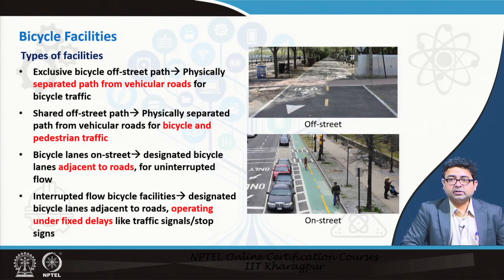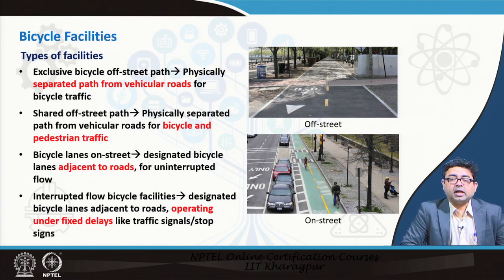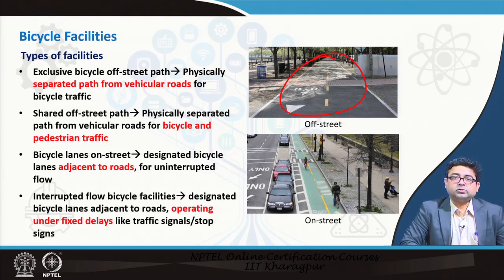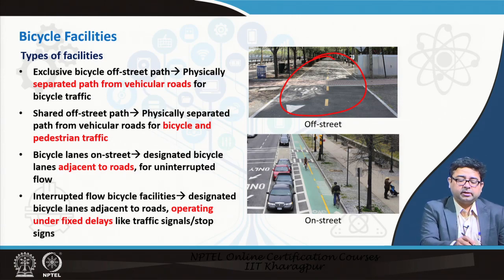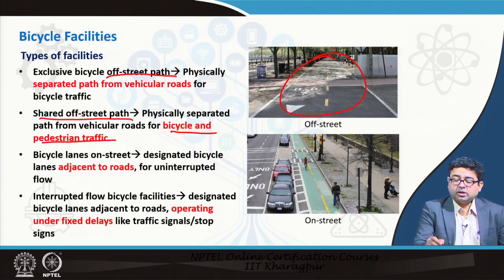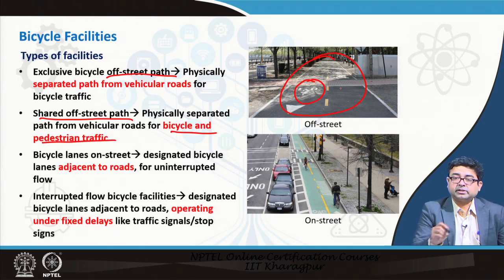Exclusive off-street bicycle paths are physically separated paths from vehicular roads and are only for bicycle traffic. There could also be shared off-street paths where bicycle and pedestrian traffic share the same route — if it is only a bicycle symbol shown, it is exclusive; otherwise there could be shared paths as well where bicyclists and pedestrians share the same path.